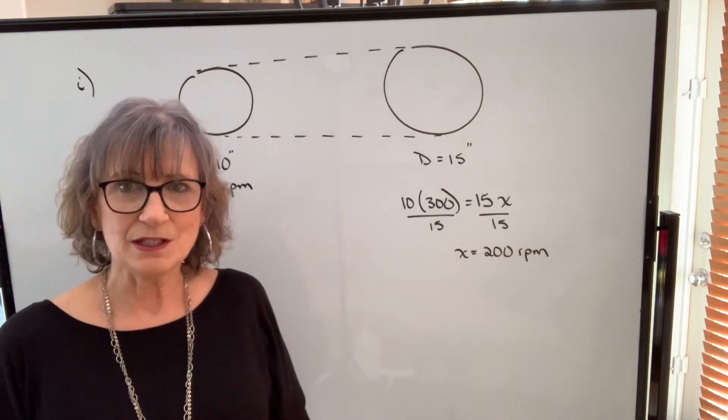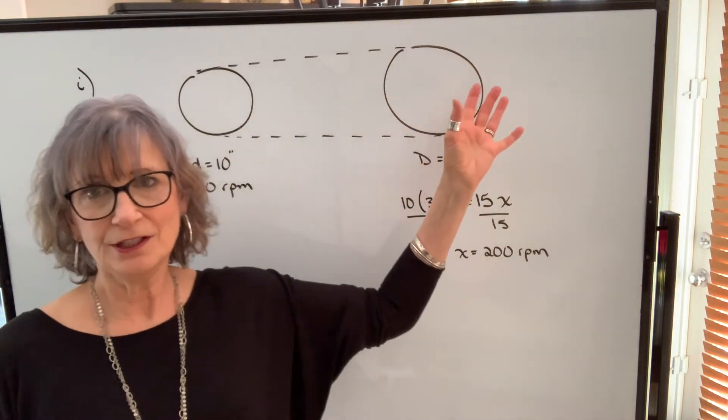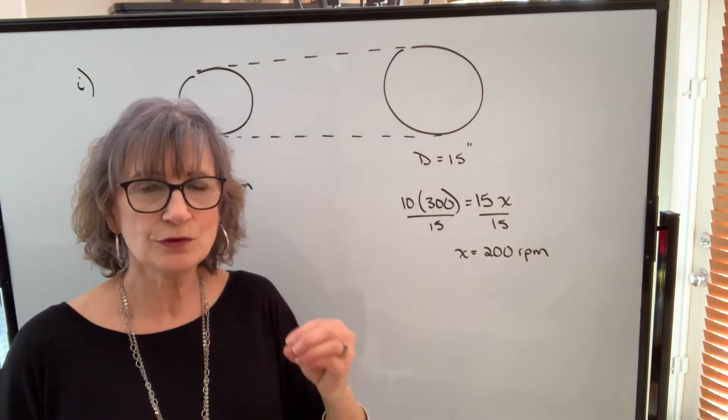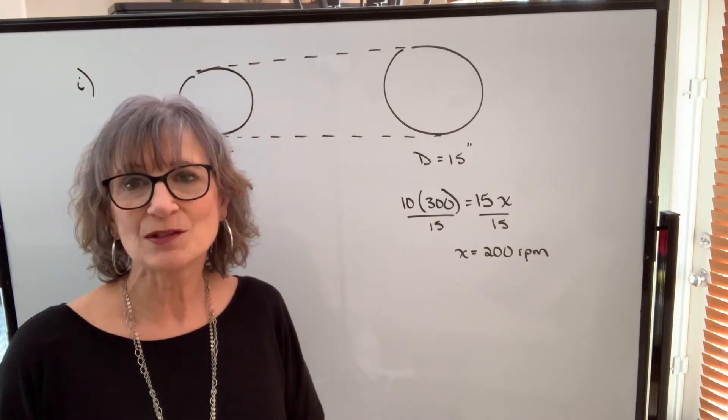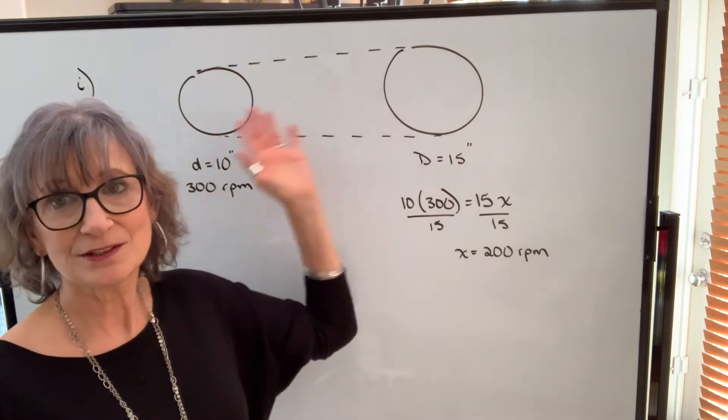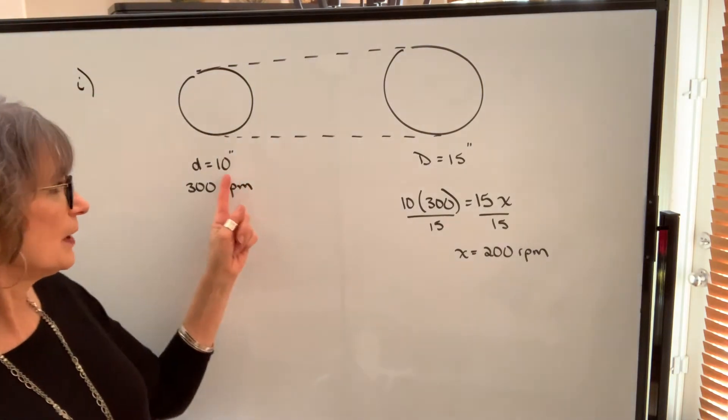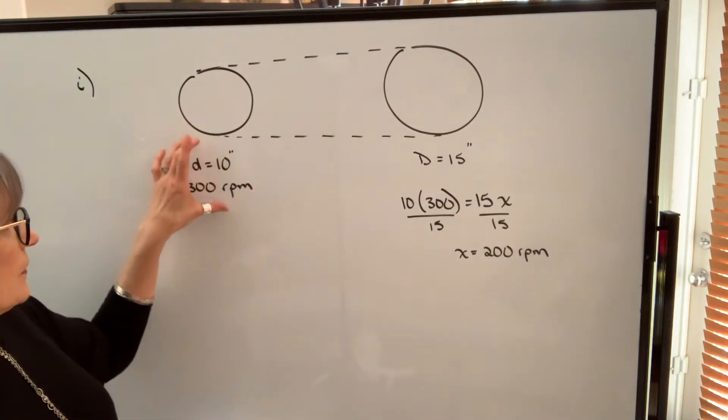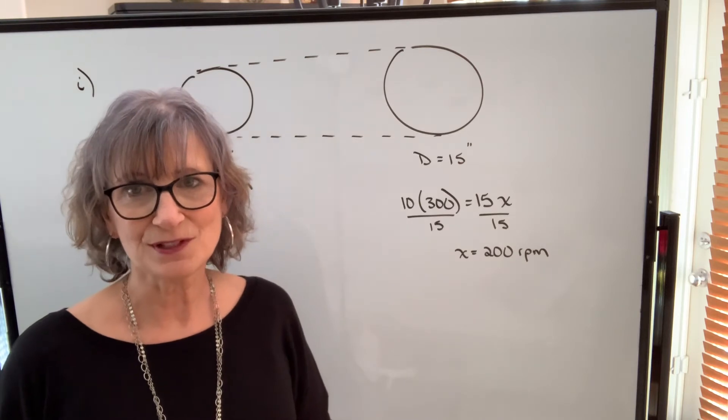When you're doing belt speed, will it matter if you use this pulley or this pulley? No. You can use either one. Just make sure that you use the right RPM with the right diameter. So I will calculate the belt speed using this one as well as this one. Generally I use whatever was given. I might have made a mistake here, so I would avoid using this. I would use what was given in the question. But I'll do it both ways and then you can see you'll get the same result.